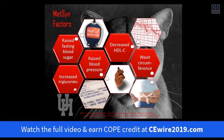Metabolic syndrome is when a person has three or more of the following five criteria. First is a raised fasting blood sugar — a fasting glucose of 100 mg/dL or greater. Second is increased triglycerides — a level of 150 mg/dL or greater. Third is elevated blood pressure — a systolic of 130 or greater, or diastolic of 85 or greater. Fourth is decreased HDL cholesterol — less than 40 mg/dL in men or less than 50 mg/dL in women.